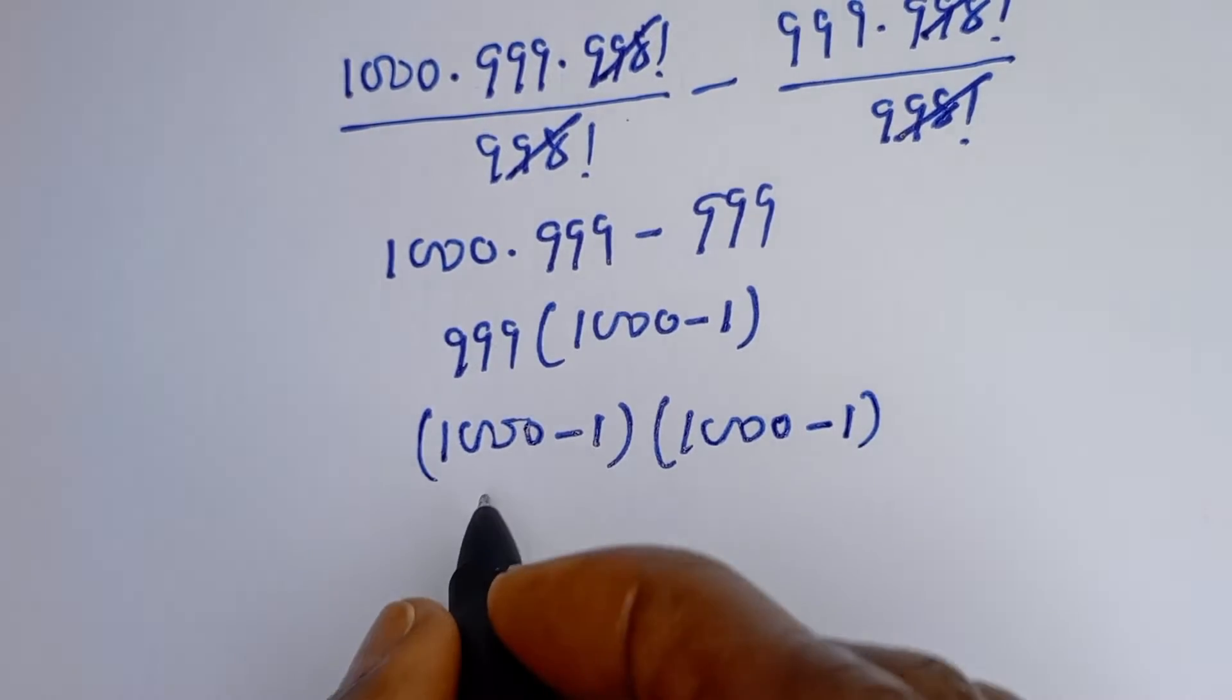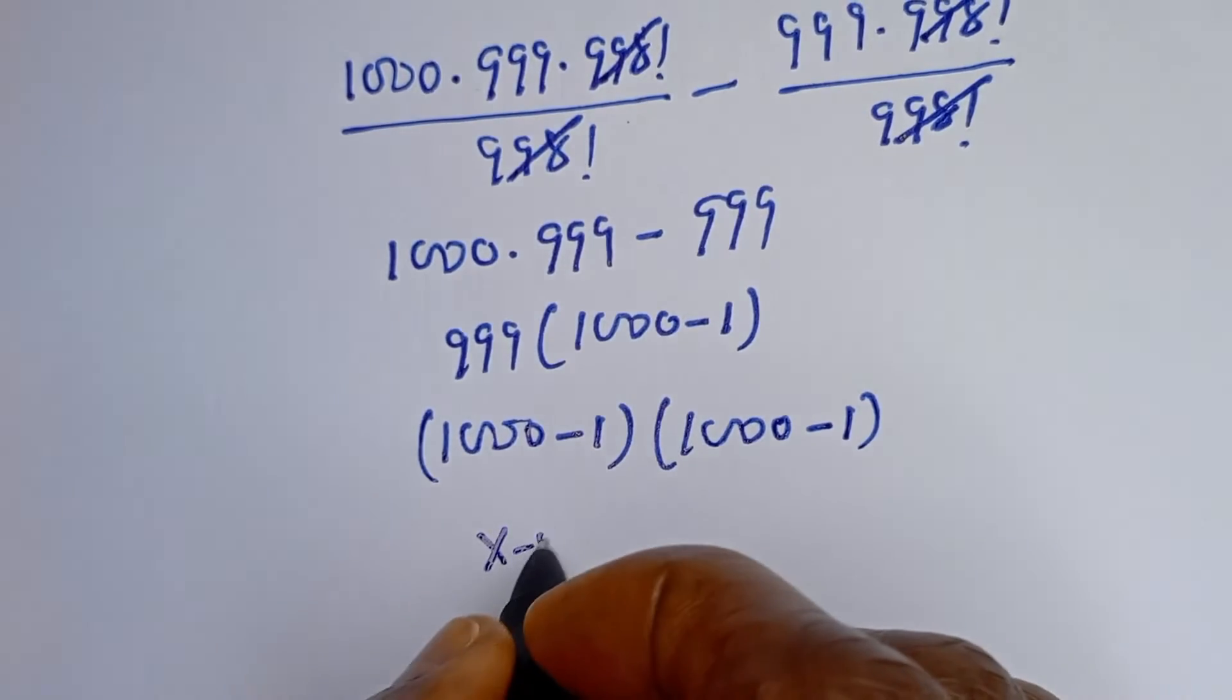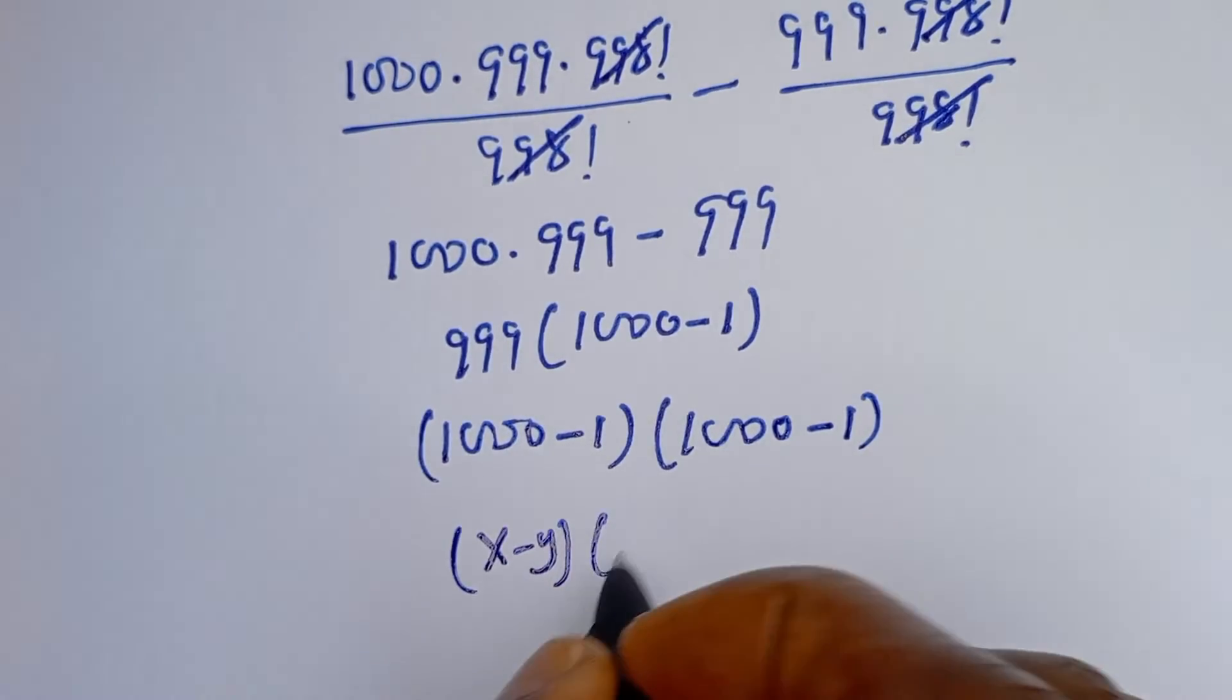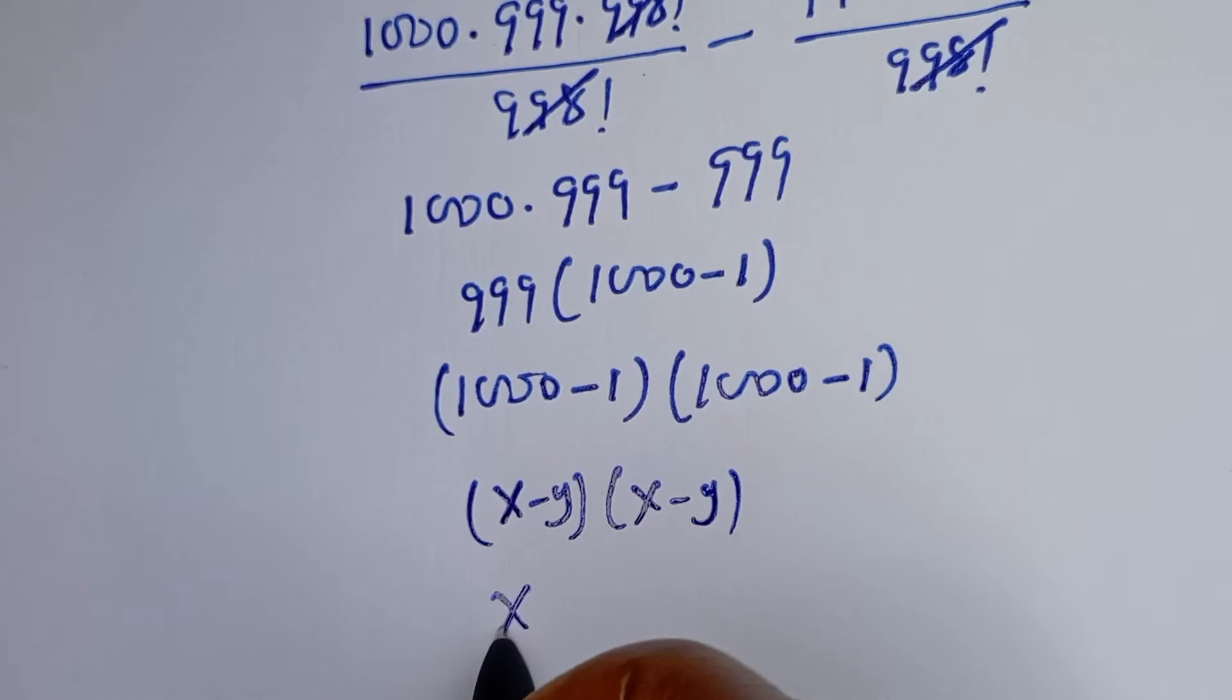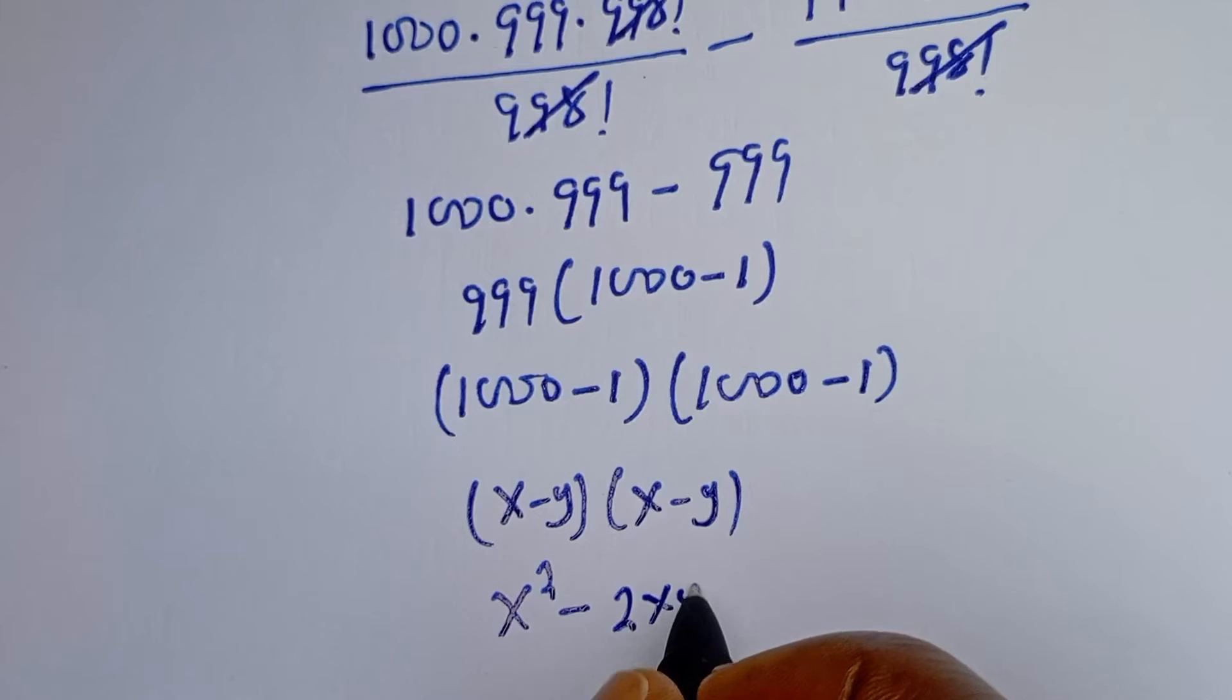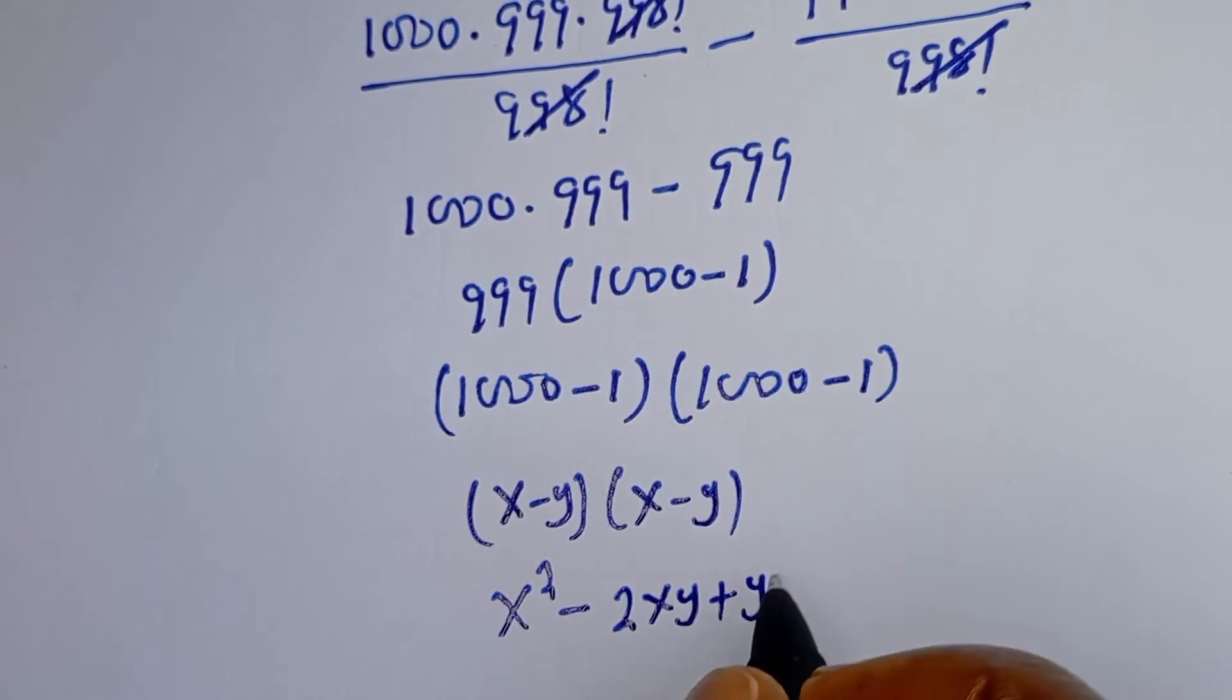Then if you look at this, this is the form of x minus y bracket, x minus y. And if you look at this bracket, we have x squared minus 2xy plus y squared.